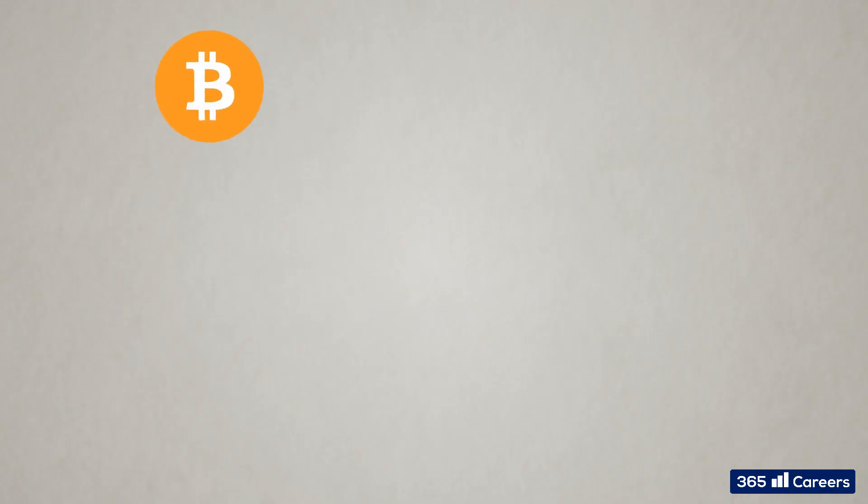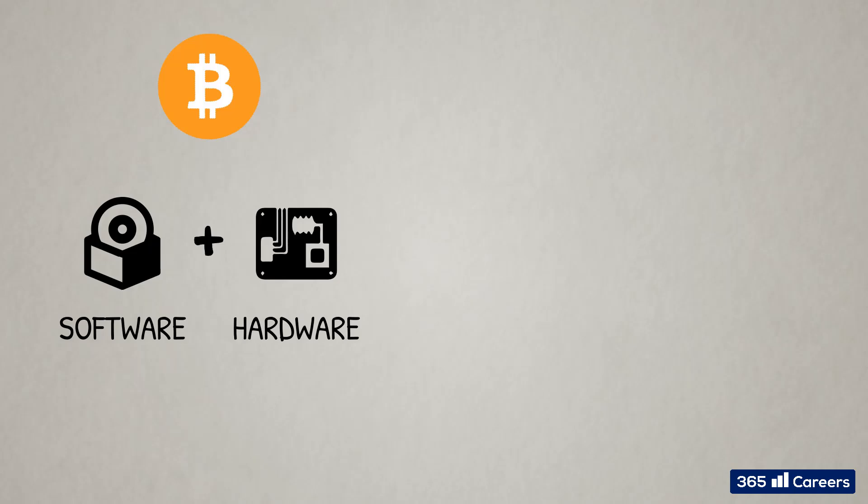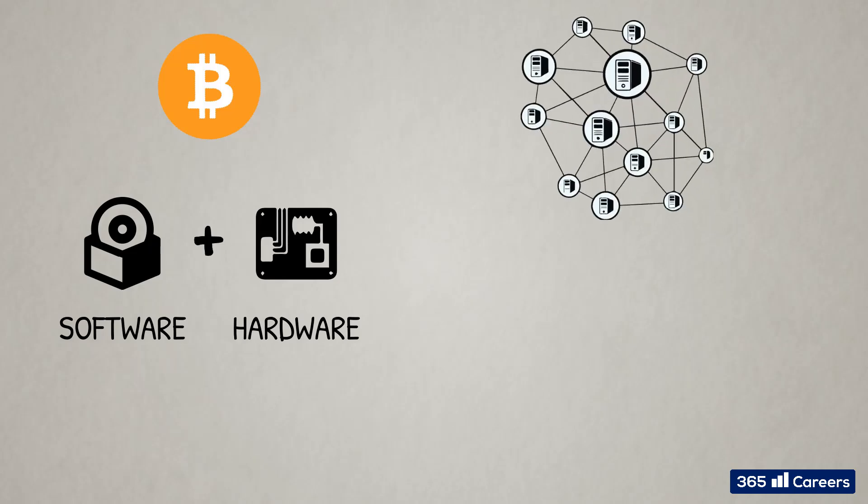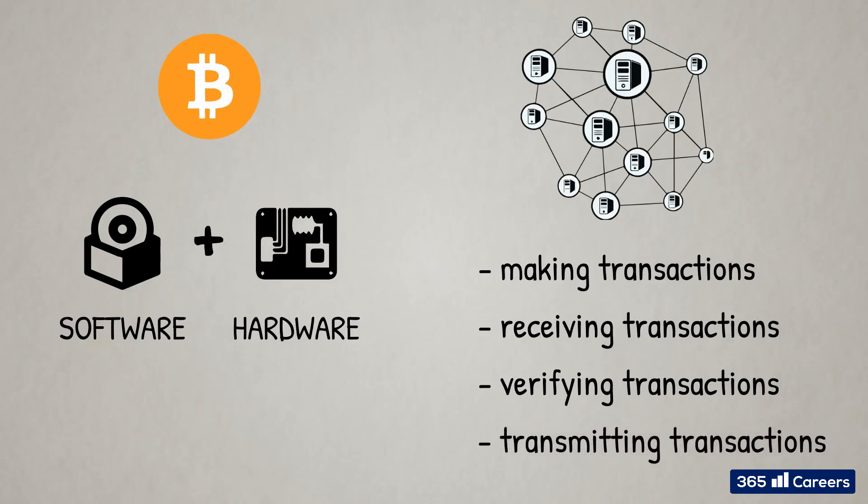Let's see how this mechanism works in Bitcoin. As we all know, Bitcoin is a peer-to-peer network where all activities are done by its users through appropriate software and hardware. These activities include making transactions, receiving transactions, and verifying and transmitting transactions.